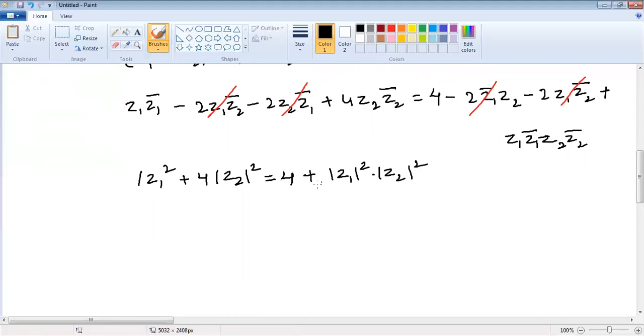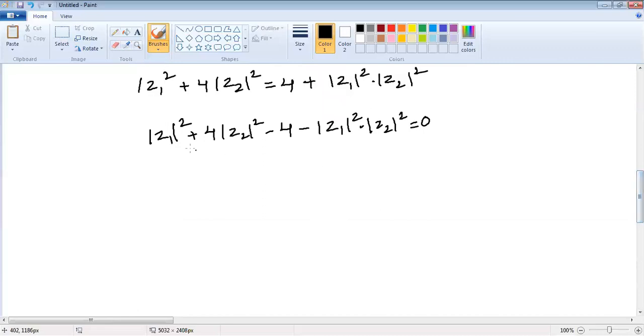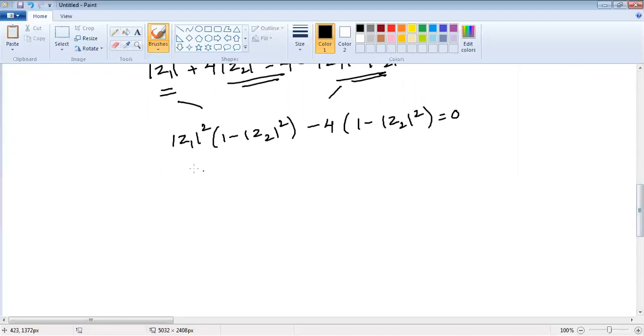Now carrying all these terms to the other side: modulus Z1 squared plus 4 modulus Z2 squared minus 4 minus modulus Z1 squared modulus Z2 squared equals 0. Taking common terms: modulus Z1 squared times (1 minus modulus Z2 squared) and minus 4 common gives (1 minus modulus Z2 squared) times (modulus Z1 squared minus 4) equals 0.